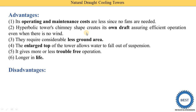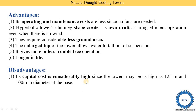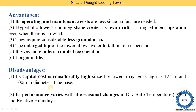There are also disadvantages. First, capital cost is considerably high since the tower may be as high as 125 meters with a base diameter of 100 meters, and they are constructed from concrete — so initial cost is very high. Second, its performance varies with seasonal change; performance depends on the dry-bulb temperature and relative humidity of the air, so as seasons change, dry-bulb temperature and relative humidity change, and performance varies.